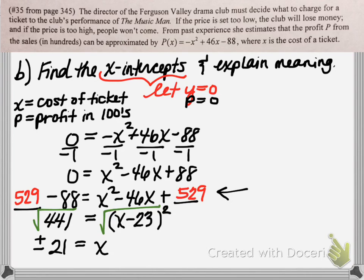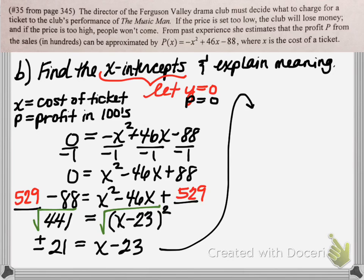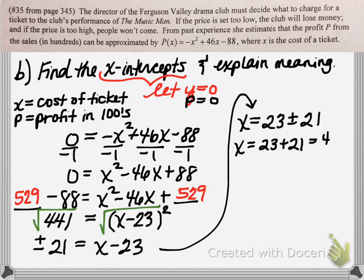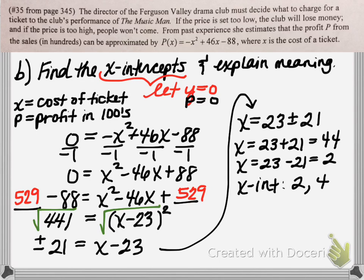So we have positive and negative 21 equals x minus 23. Adding 23 to both sides, we get x equals 23 plus or minus 21. That means we have two different answers: the first answer is 23 plus 21, which is 44, and the second answer is 23 minus 21, which is 2.